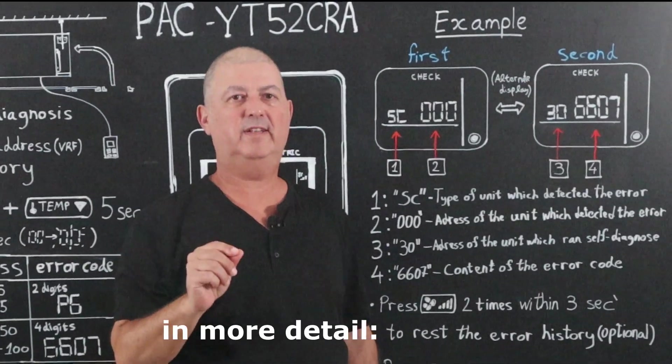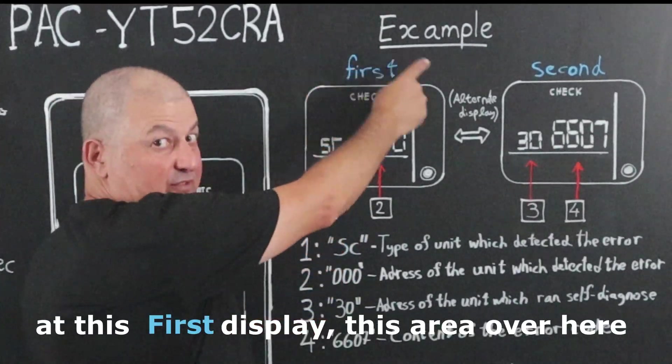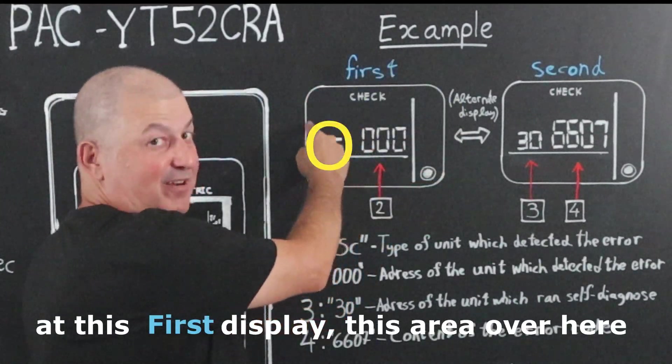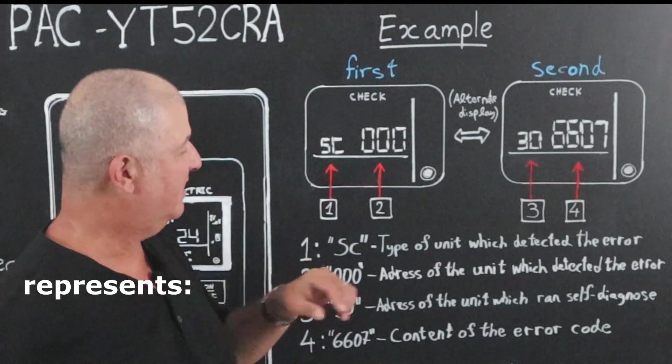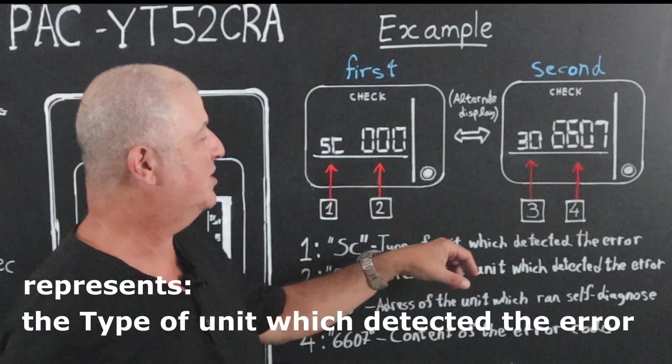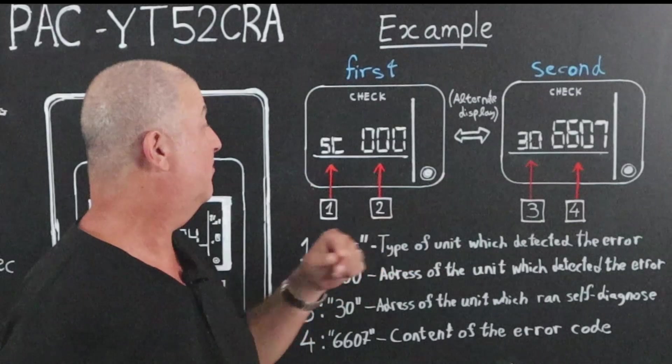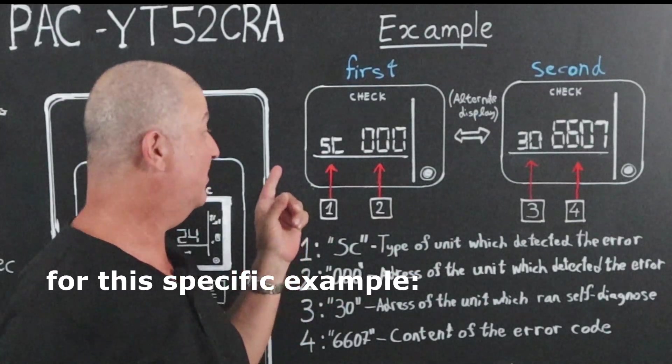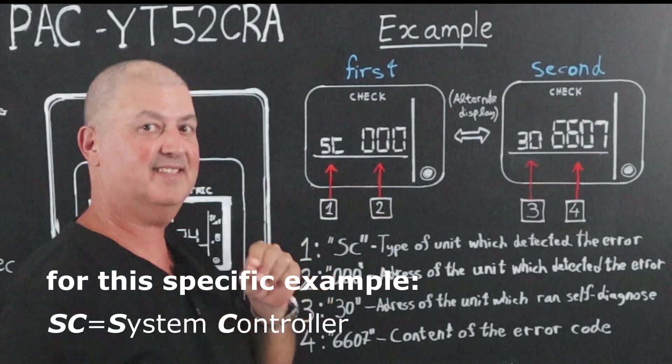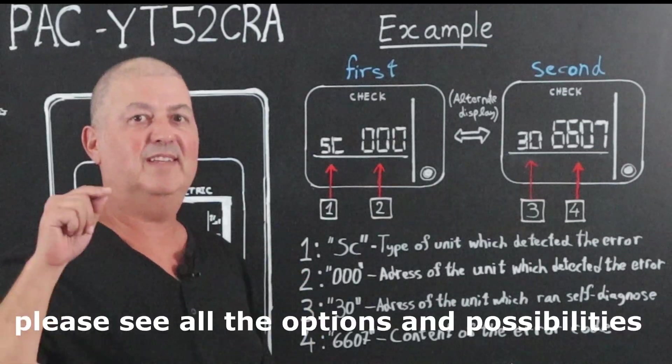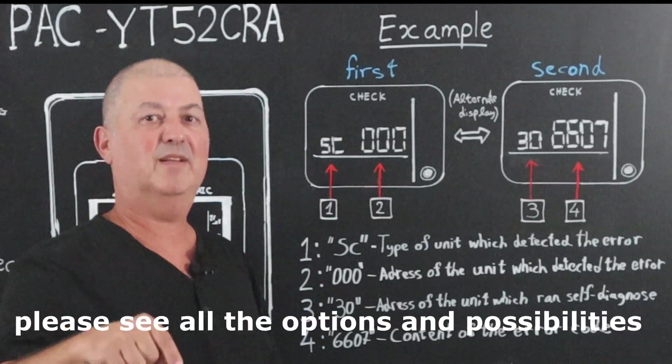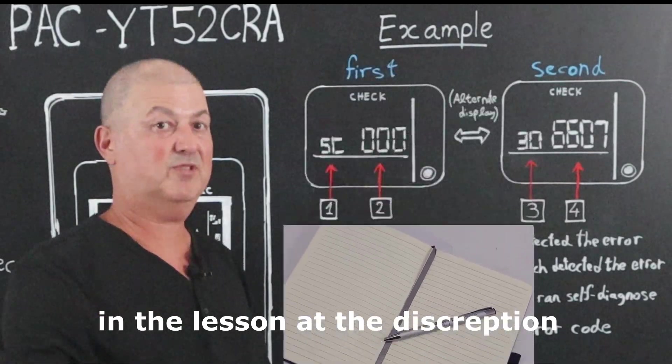In more detail, at this first display, this area over here represents the type of unit which detected the error. For this specific example, SC means system controller. Please see all the options and possibilities in the lesson at the description.